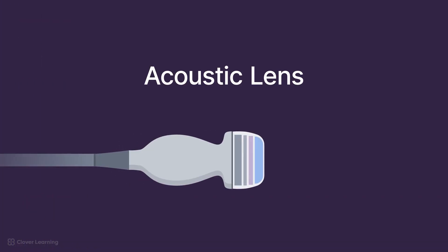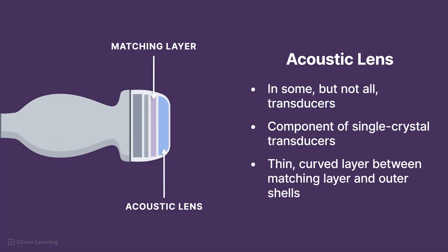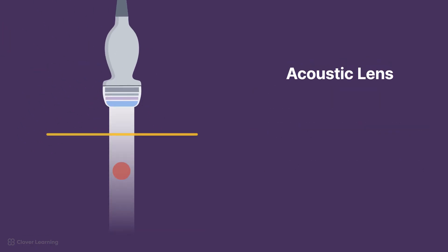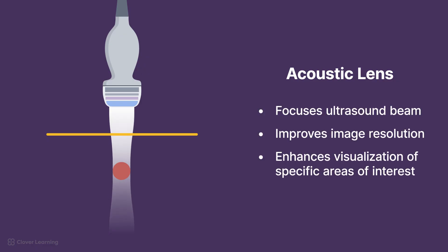Though not a component of all transducers, some single crystal transducers include an acoustic lens. The acoustic lens is a thin, curved layer of material placed between the matching layer and the outer shells of the transducer. Its primary purpose is to focus the ultrasound beam to improve image resolution and enhance visualization of specific areas of interest.